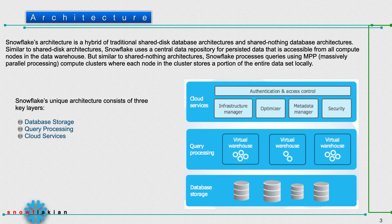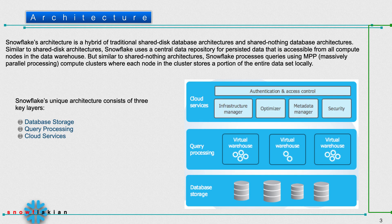Snowflake's architecture is divided into three layers: the database storage layer, the query processing layer, and the cloud services layer. Apart from this, Snowflake's architecture is a combination of shared-disk database architecture and shared-nothing database architecture. In shared-disk architecture, virtual warehouses share the same data stored in the database storage layer.